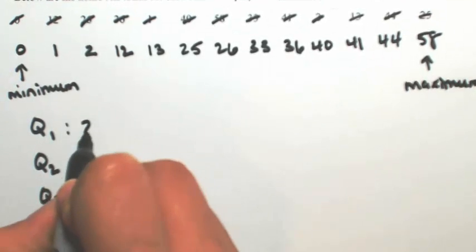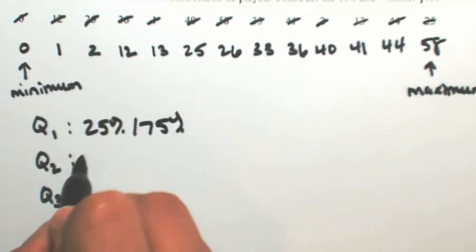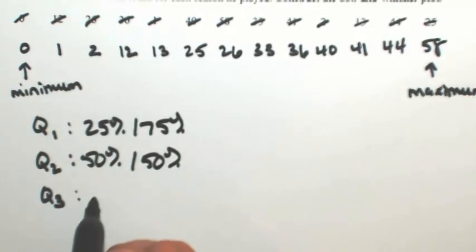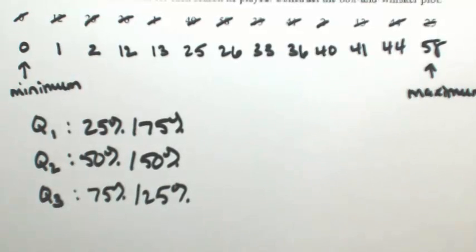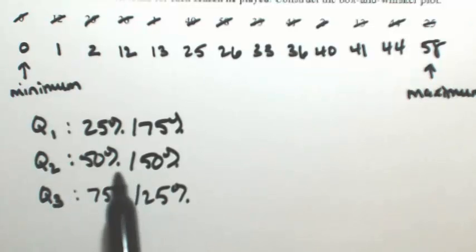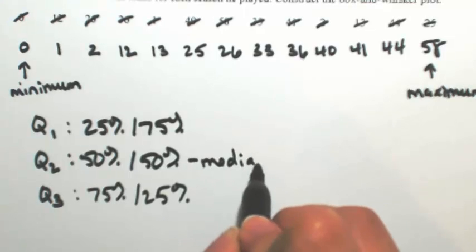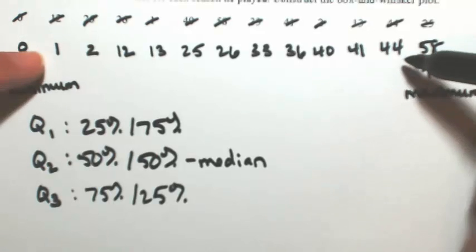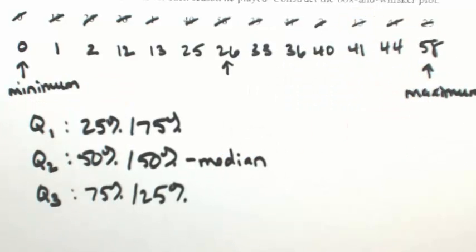Q1 separates the bottom 25% from the top 75%. Q2 separates the bottom 50% from the top 50%, and Q3 separates the bottom 75% from the top 25%. So Q2, if you look at it, is just right in the middle because you're separating the bottom 50 from the top 50. So this is the same thing as the median. So we can easily identify that. Just starting on the outsides and working your way in. So 26 is going to be Q2.